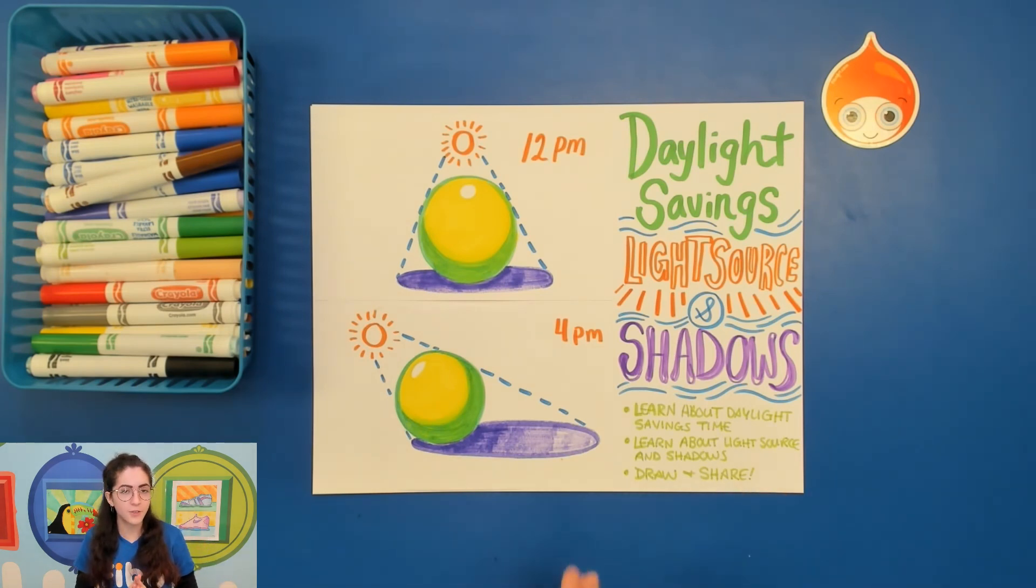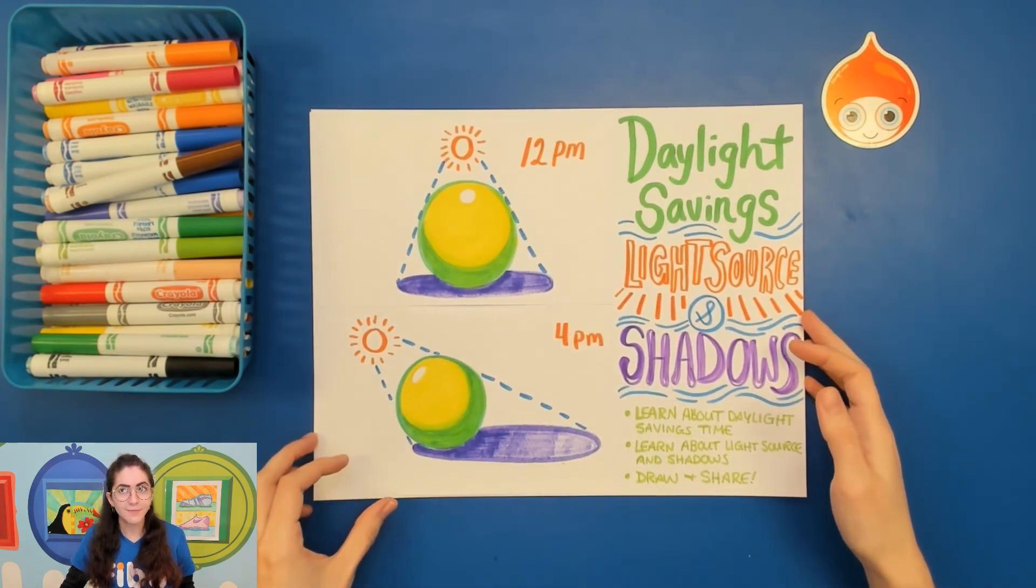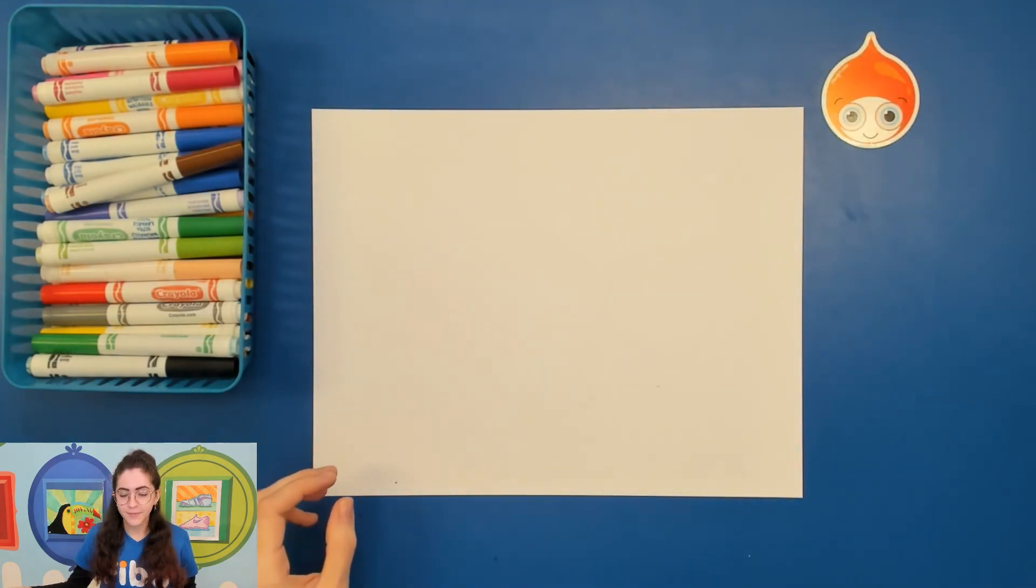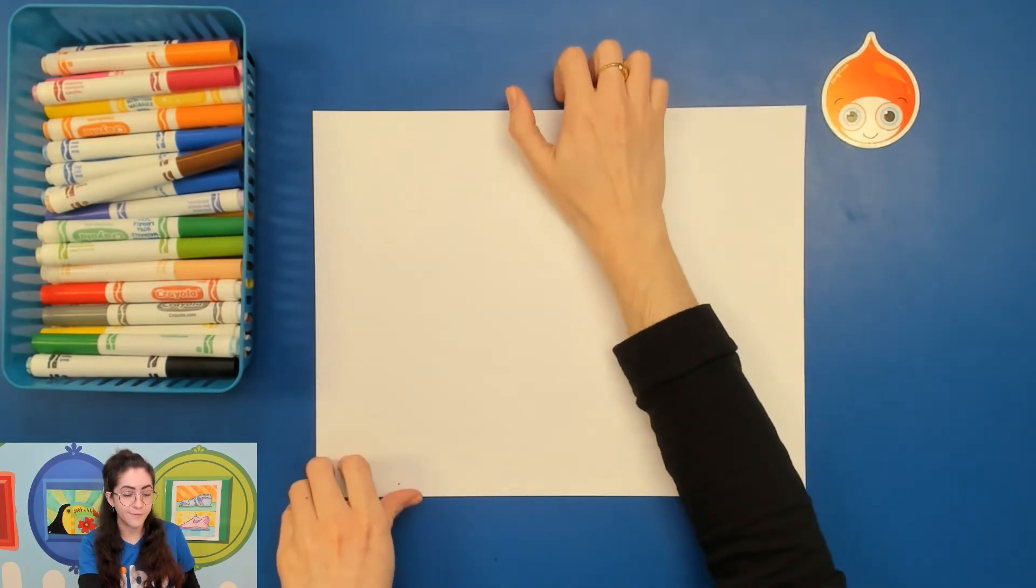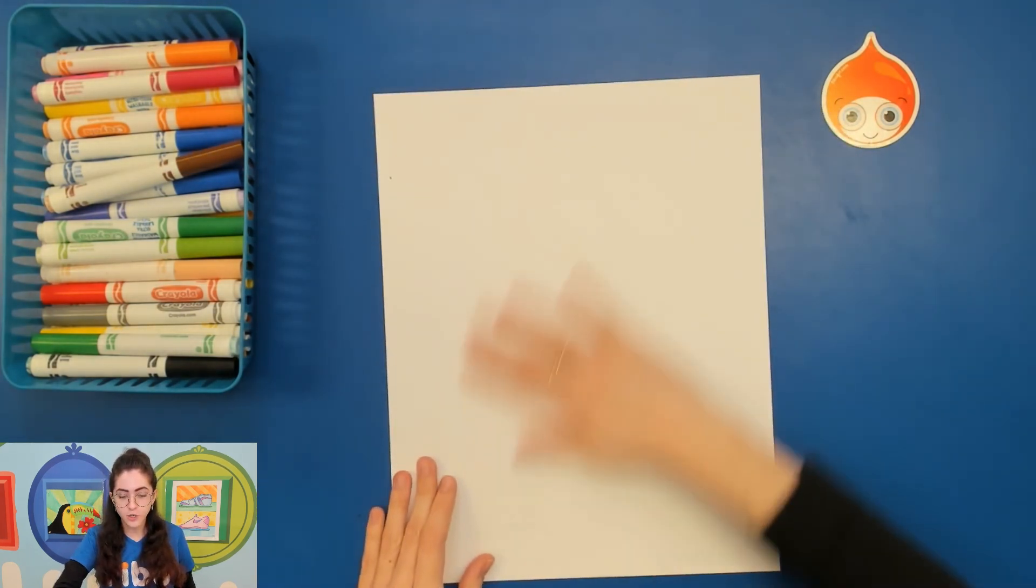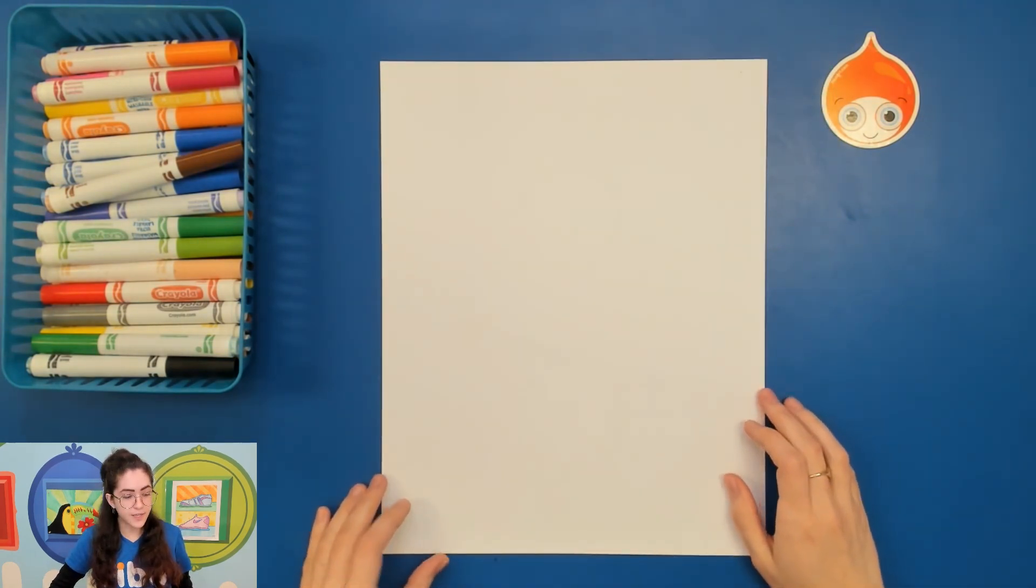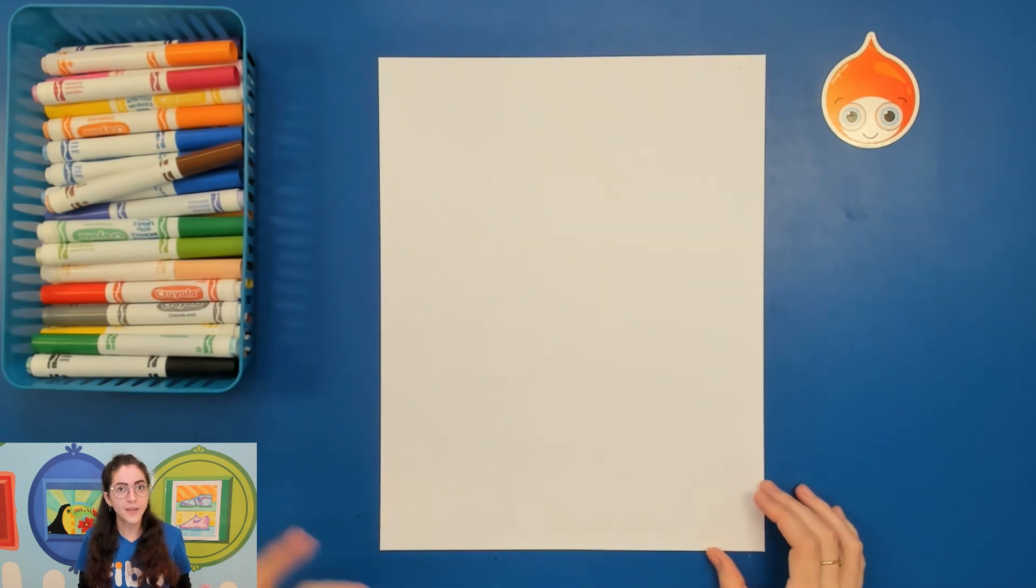So this is a little tricky to kind of think about if you've never thought about it before but we're going to do a drawing exercise to kind of practice seeing how the light source when it changes it'll also change the shadow from the object. Now what does this have to do with daylight savings? Well daylight savings is all about the sun and when it's going to be up.